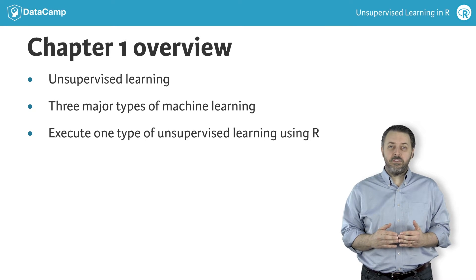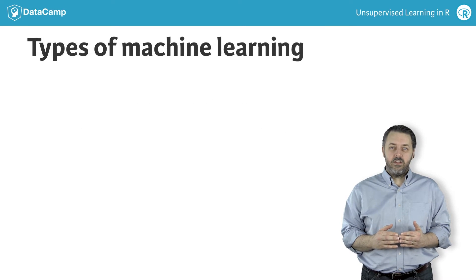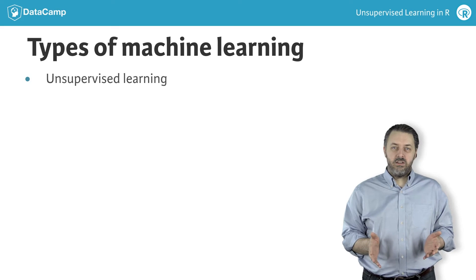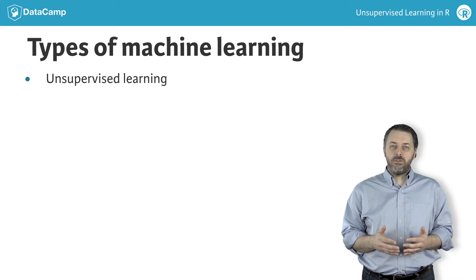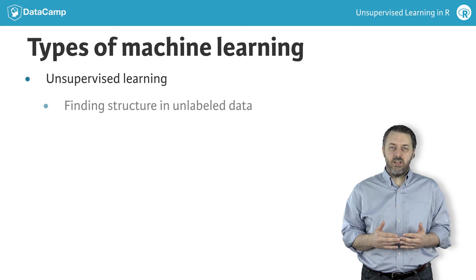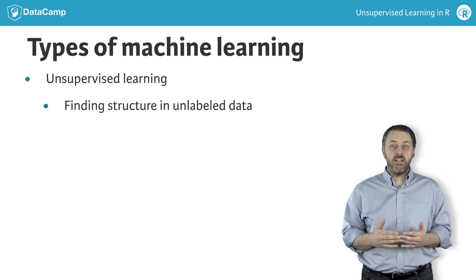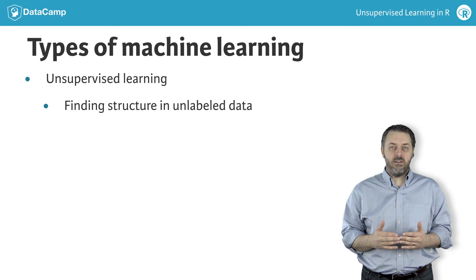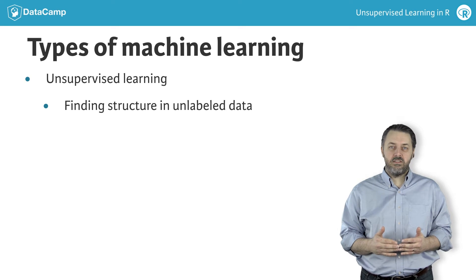There are three major types of machine learning. The first type is unsupervised learning. The goal of unsupervised learning is to find structure in unlabeled data. Unlabeled data is data without a target, without labeled responses.